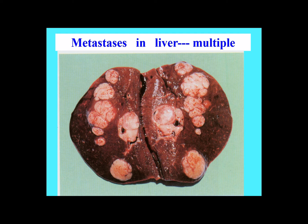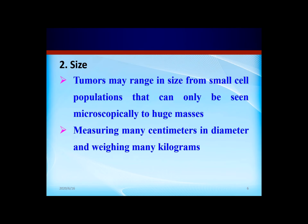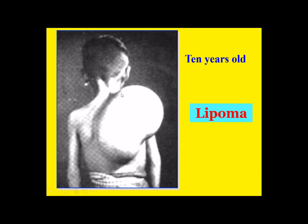So the number can be single or multiple. Secondly, size. Tumors may range in size from small cell populations that can only be seen microscopically to huge masses, measuring many centimeters in diameter and weighing many kilograms. Here we can find a huge mass. This is a lipoma derived from fat tissue, so it's very huge.